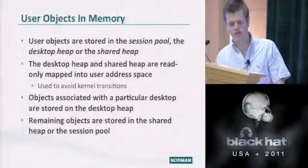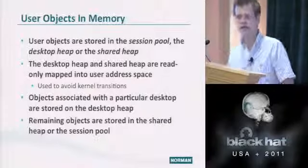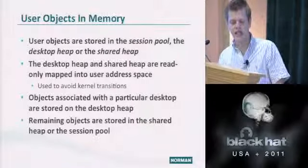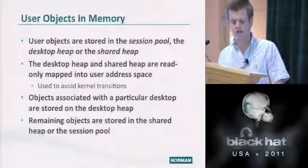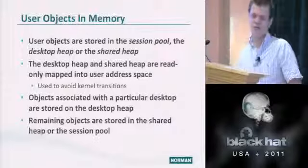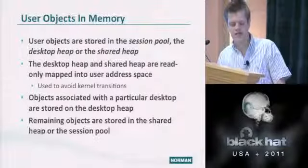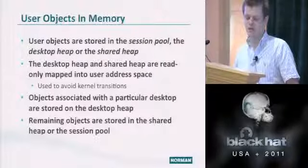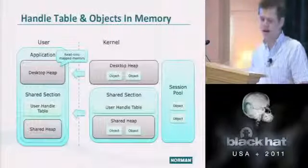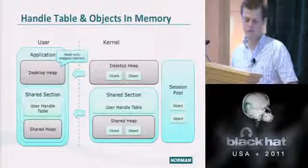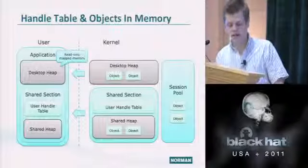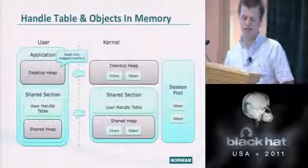User objects are stored in either the session pool, the desktop heap, or the shared heap — all in kernel mode. The desktop heap and shared heap are read-only mapped into user address space. Any process that invokes the GUI subsystem will have these memory mappings set up, to avoid kernel transitions. This makes it quite easy to enumerate kernel memory pointers for exploitation.